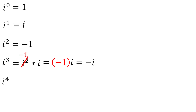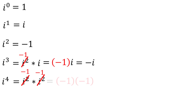What about i to the fourth power? Well that's equal to i squared times i squared. But we already know that i squared is equal to negative 1. Therefore i to the fourth is just negative 1 times negative 1, which is equal to positive 1.